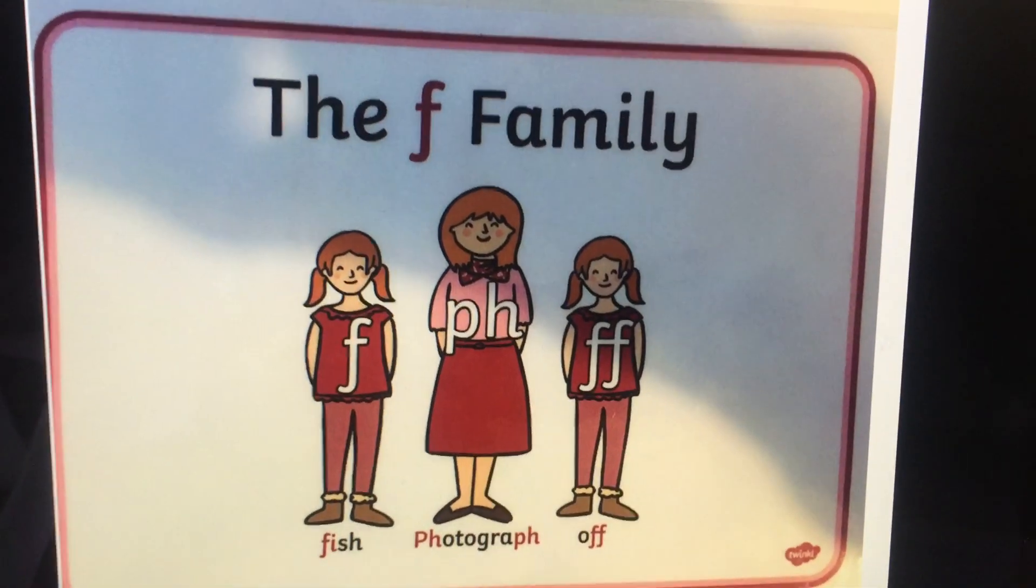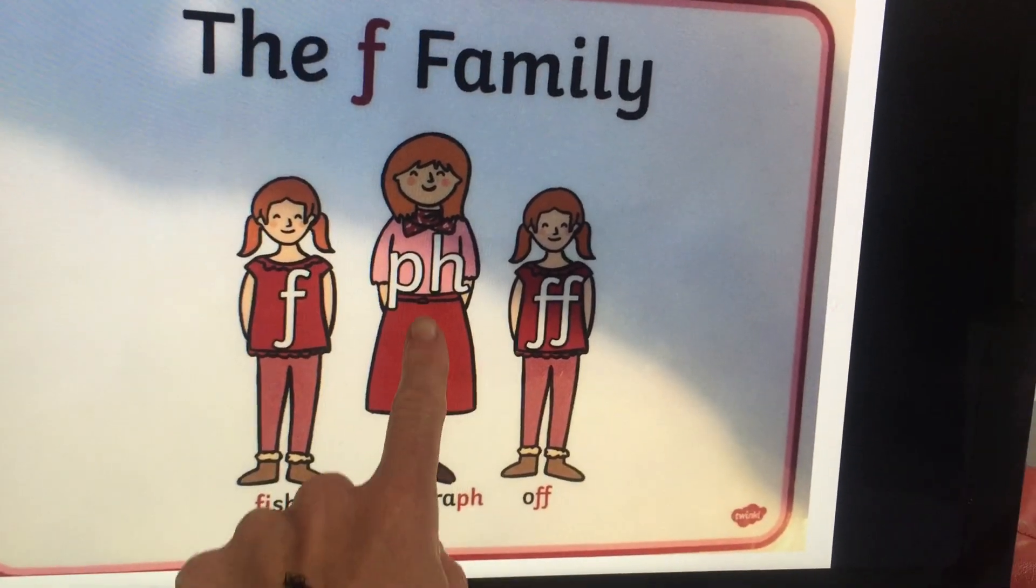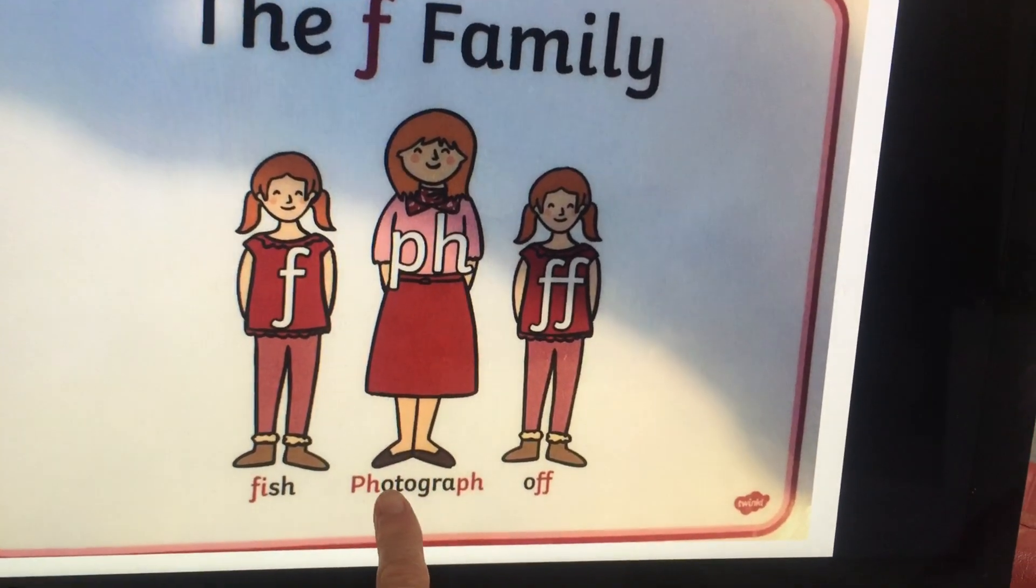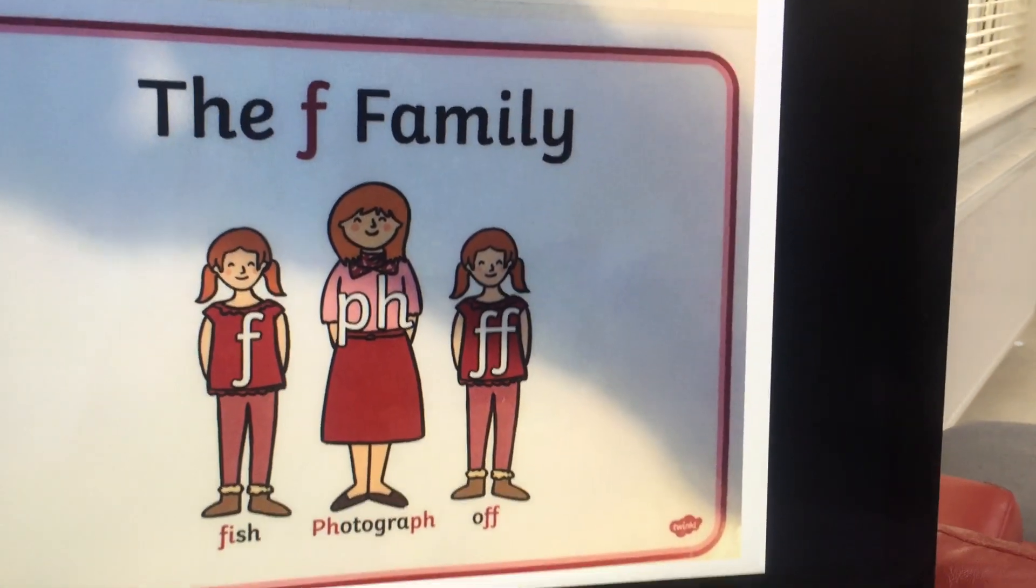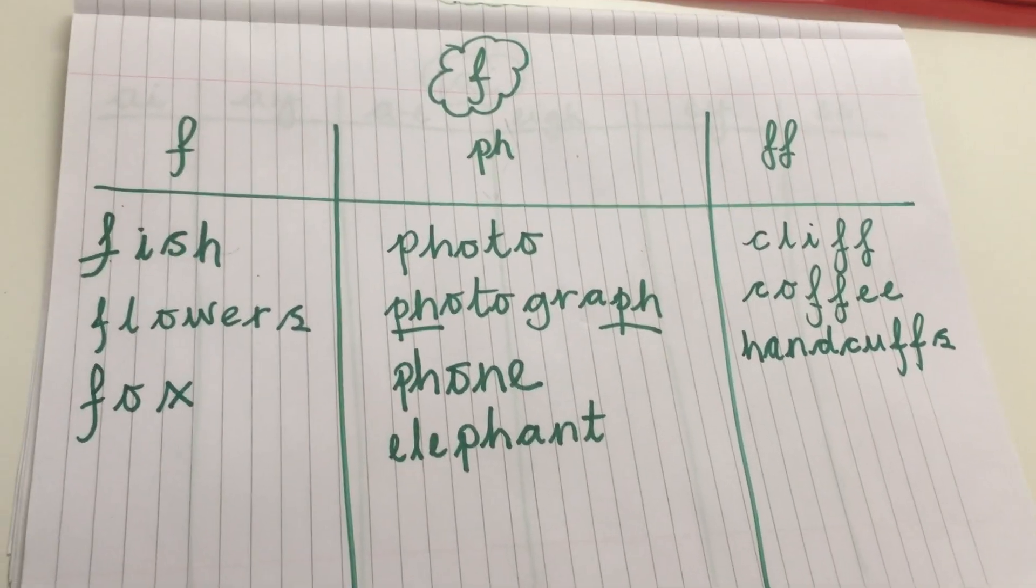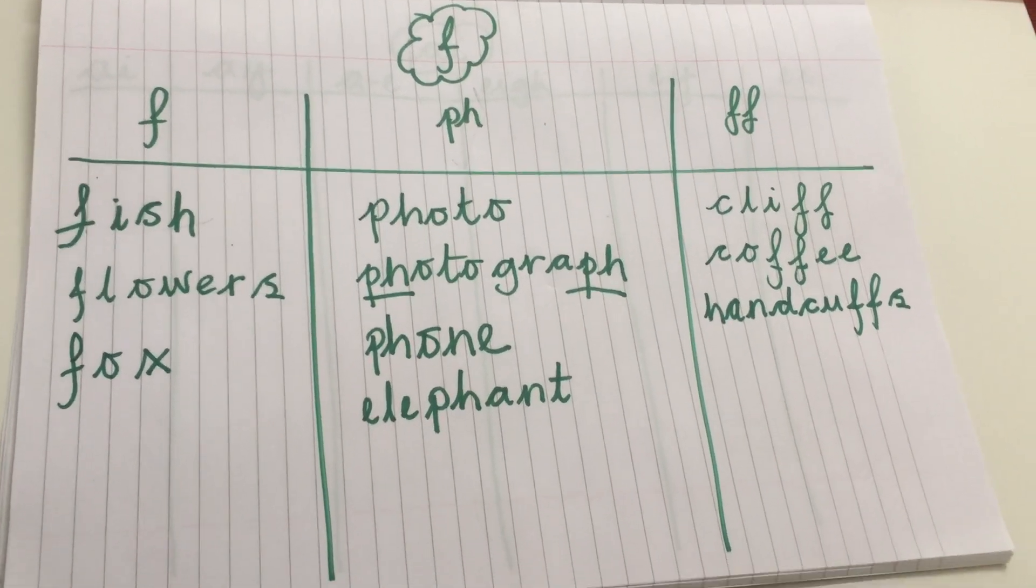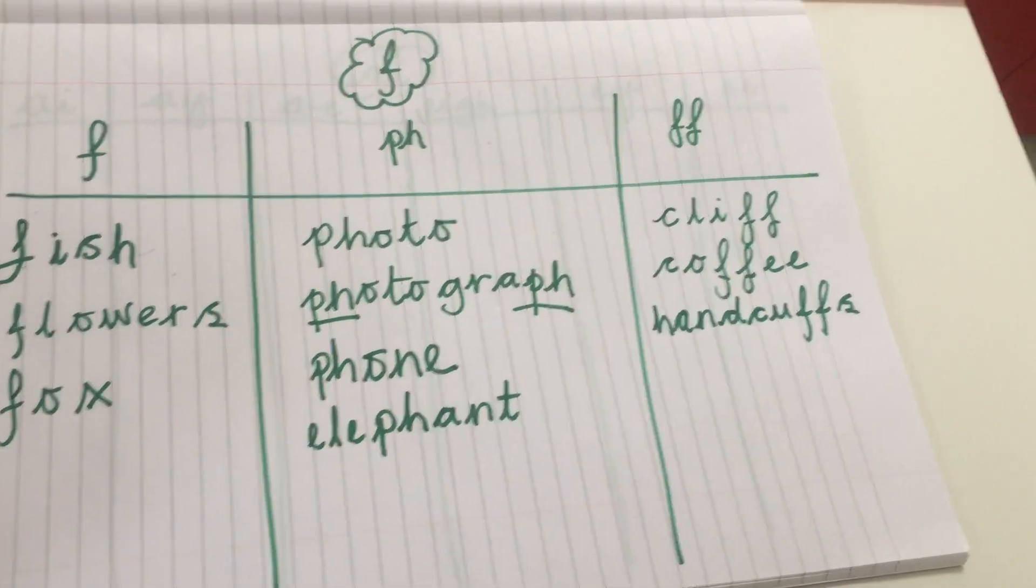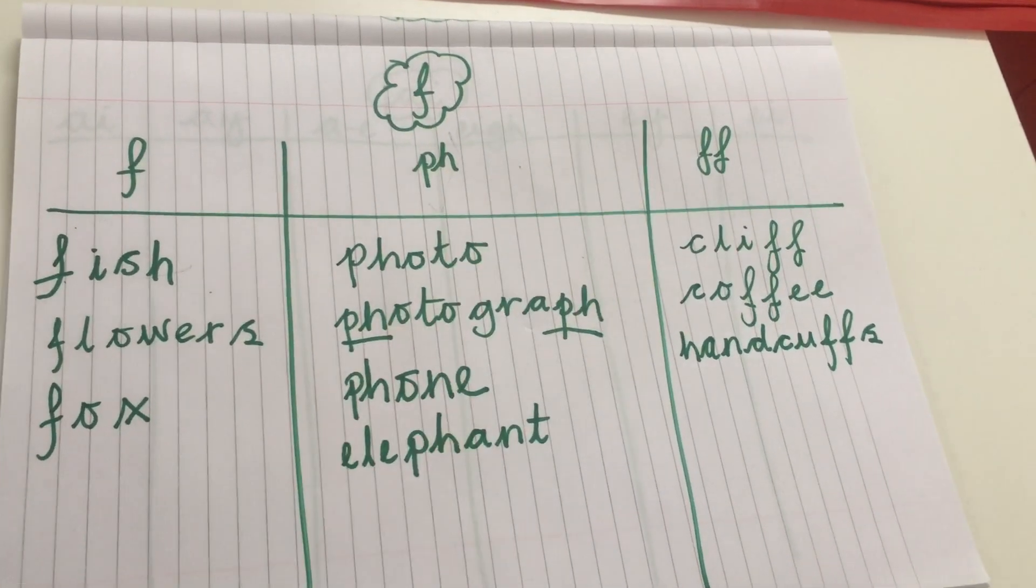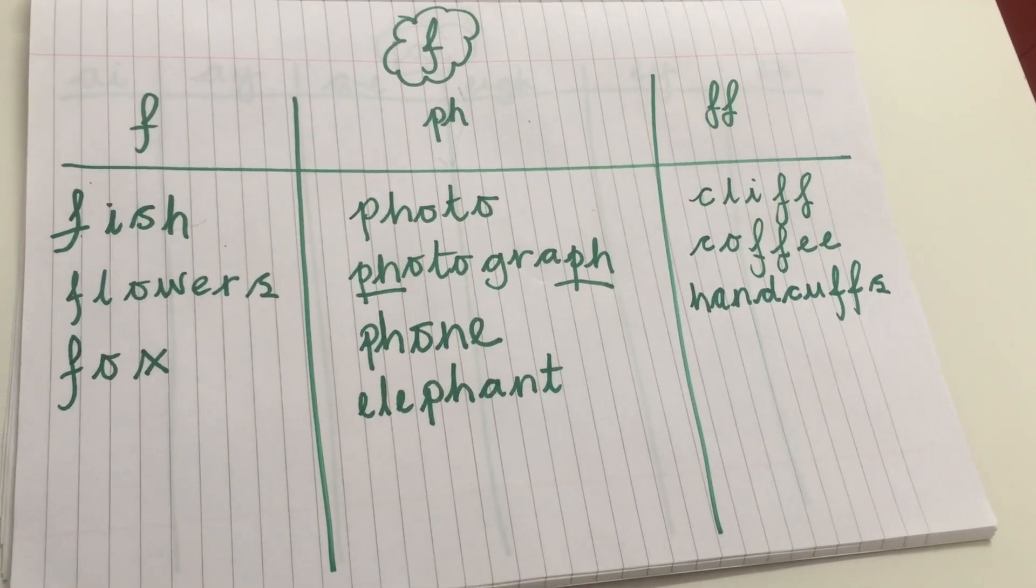And that today is our F family: F as in fish, F as in photograph, and F as in off. Well done everyone. See if you can add some more words to this list. Ask your mummies and daddies and grandparents, whoever's looking after you, to see if they can help you add a few more words to your list. And then you can email me those and I can add them to our class lists. Thanks for listening. Bye for now.